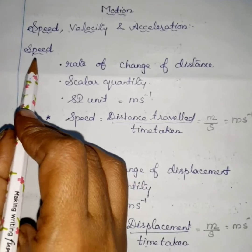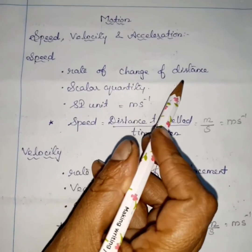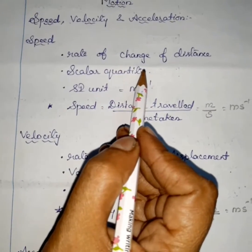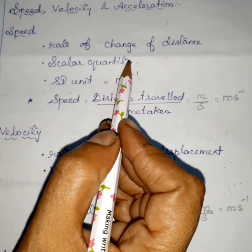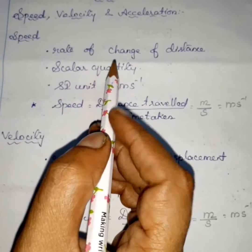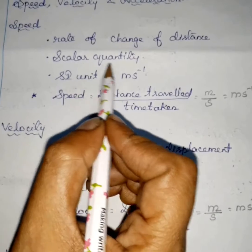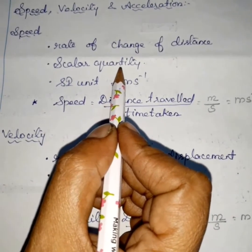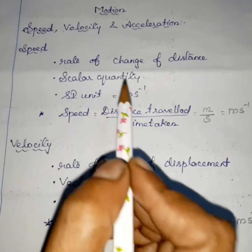What is speed? Speed is the rate of change of distance, or distance traveled in unit time. One second the object travels is called speed. It is a scalar quantity because it is having only magnitude.